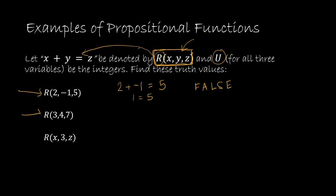Looking at the next example R(3,4,7) again x, y, z have each been given a value so this turns from a propositional function into a proposition. That gives me 3 plus 4 equals 7 replacing x with 3, y with 4, and z with 7. 3 plus 4 is 7. 7 equals 7 is true. So it does have a truth value and in this case that truth value is true.